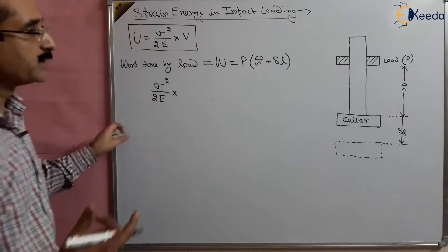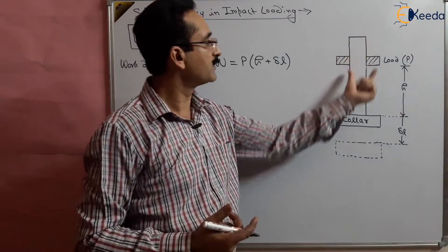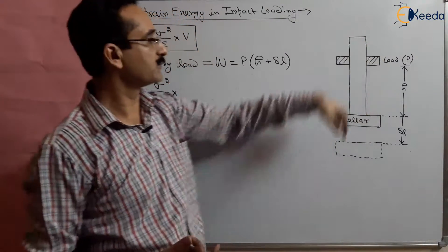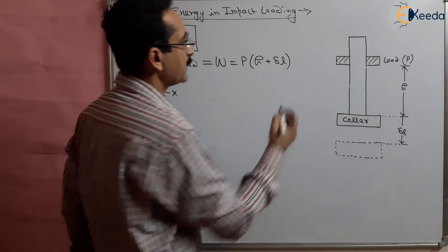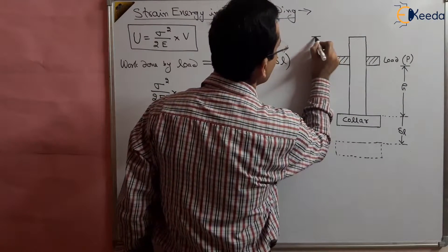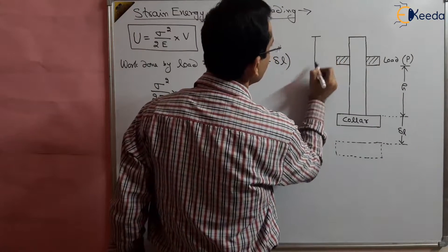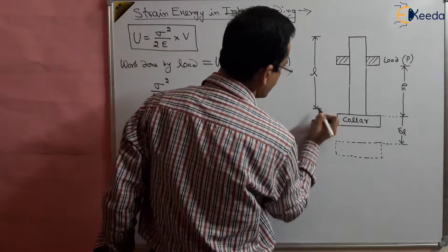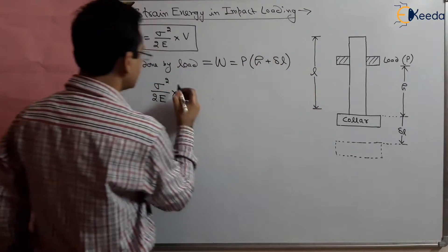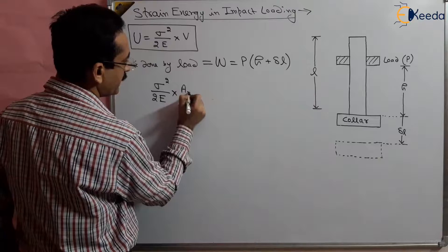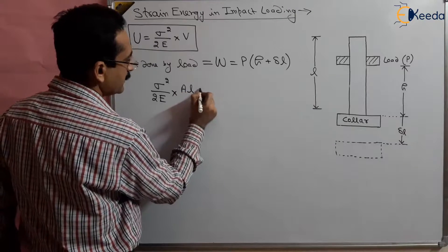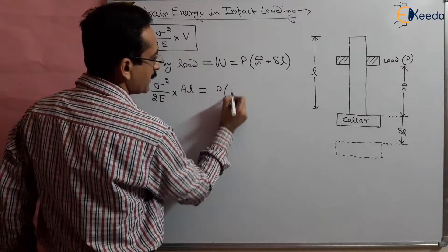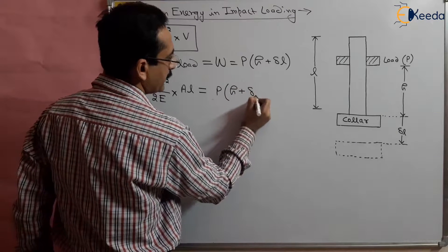This strain energy will be given by sigma squared over 2E multiplied by the volume. The volume is area multiplied by the length of the bar — the total length of this bar is L. So we have: sigma squared over 2E multiplied by area into length equals P(h plus delta L).